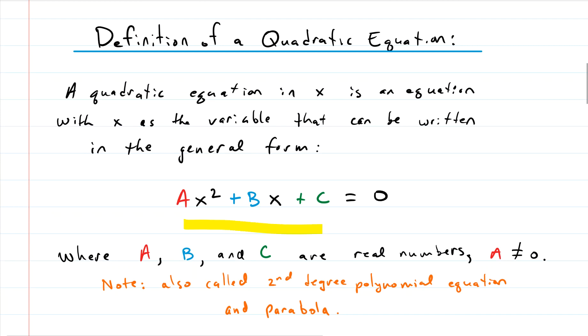What is the definition of a quadratic equation? Here's your review. This thing right here is a quadratic equation. A quadratic equation is also called a second-degree polynomial and a parabola.